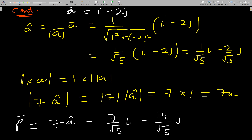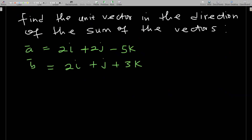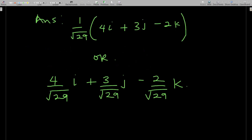I wanted to show you how to find a vector with a specific magnitude in a certain direction. I hope you can solve this type of question when you meet it. Here is a practice question for you: find the unit vector in the direction of the sum of the vectors a and b. The answer should come out in either of these two equivalent forms, or you can rationalize.